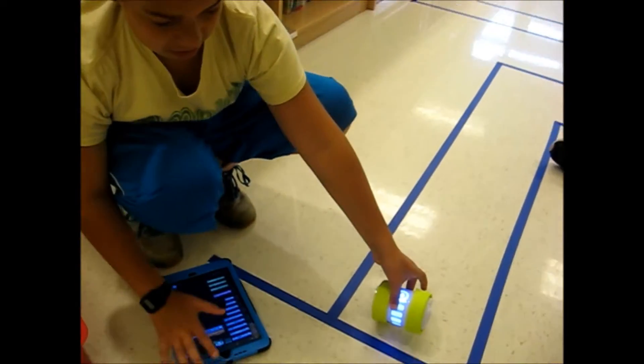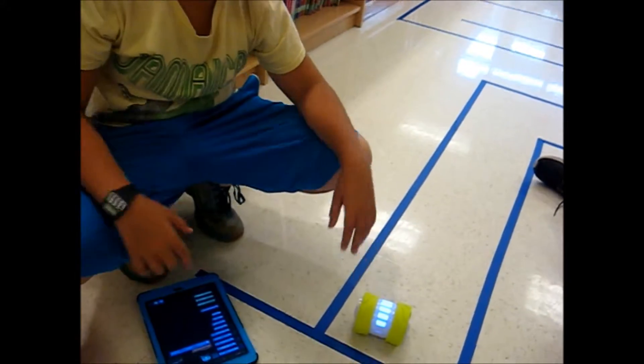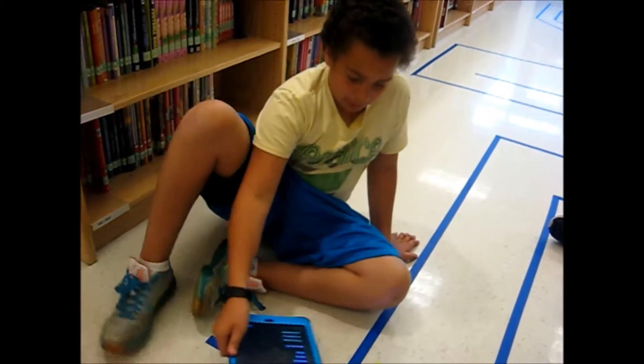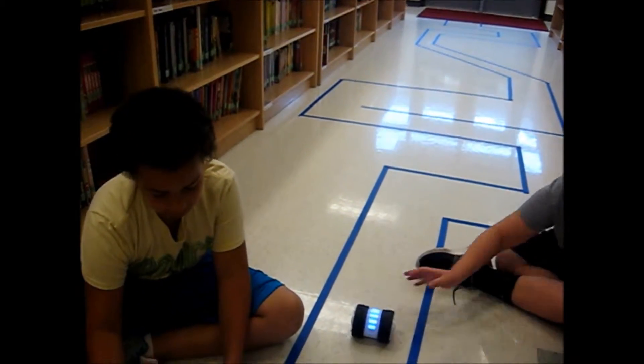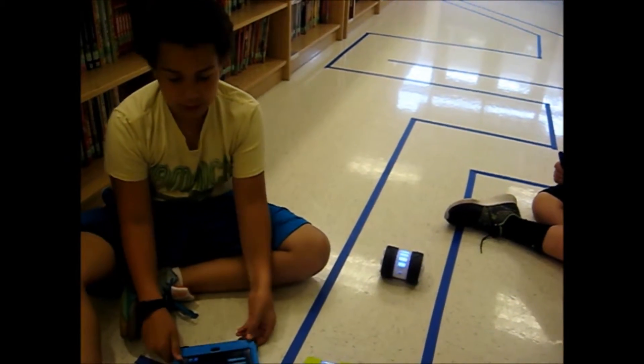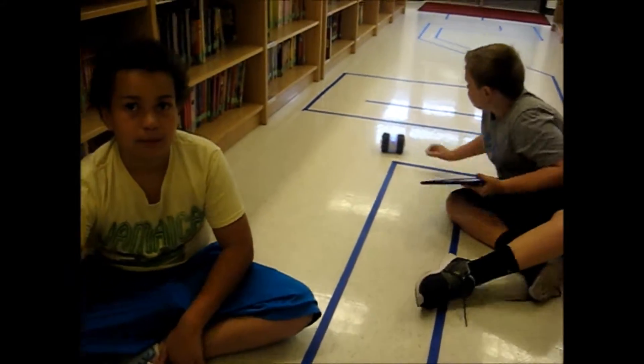Evan, tell us about it. Tell us about the Ollie you're working with. Well, I'm also trying to get the Ollie through the track, and I'm trying to program it so it will go forward about two seconds at 90 percent speed. And then turn it right at 90 degrees. Okay, very good.